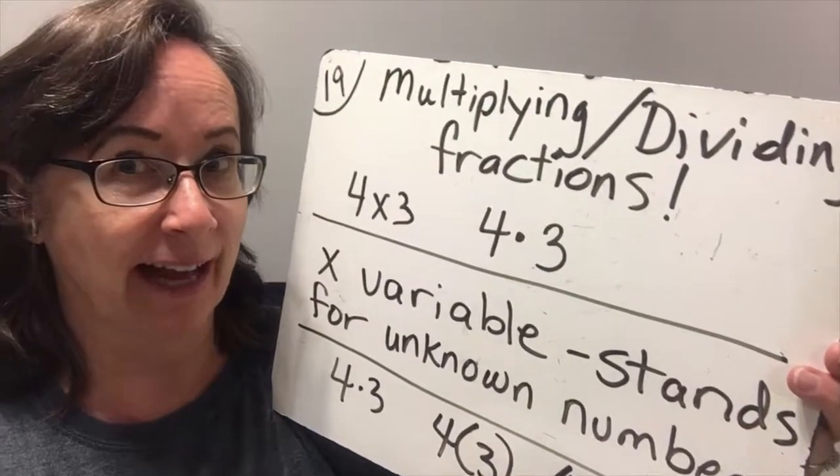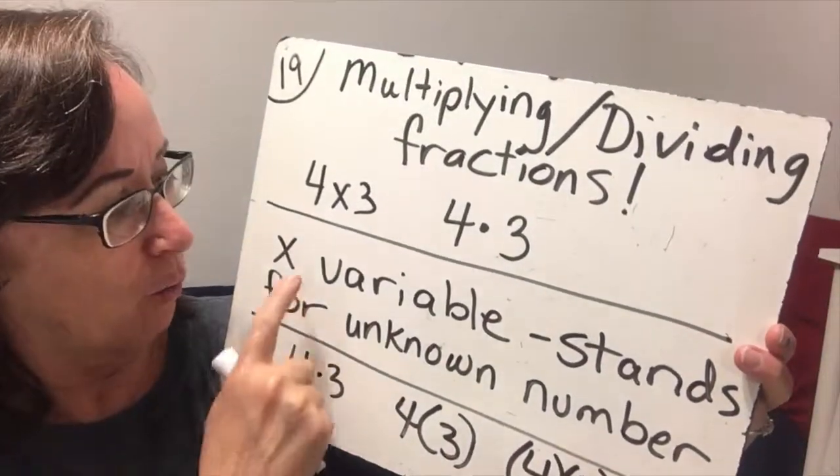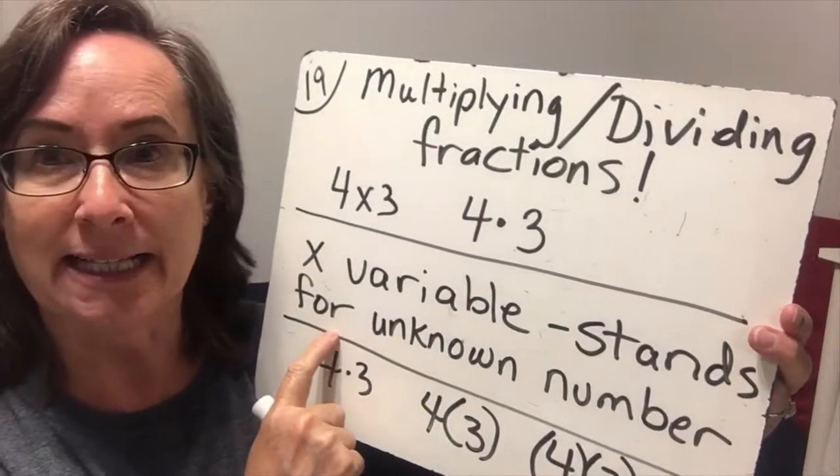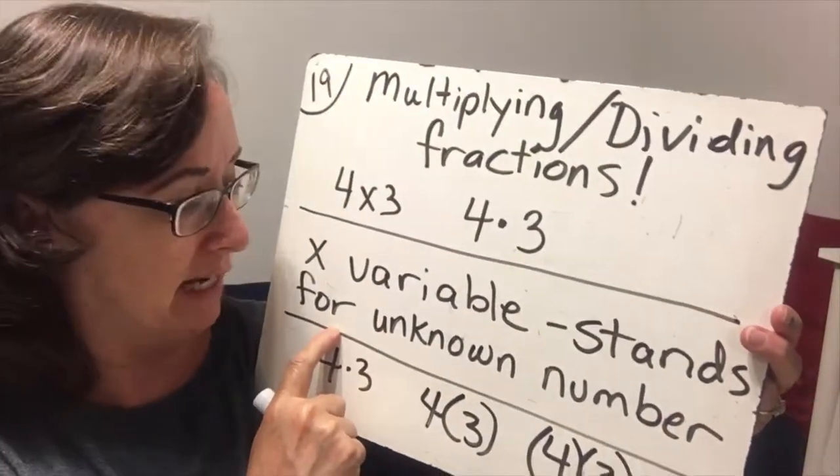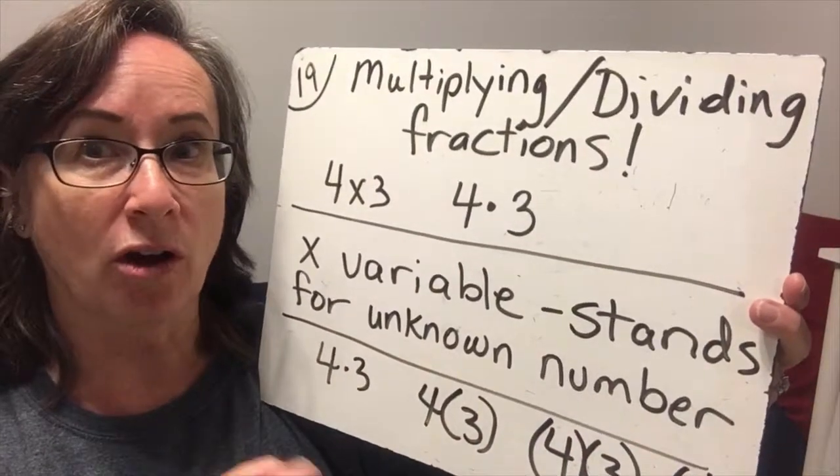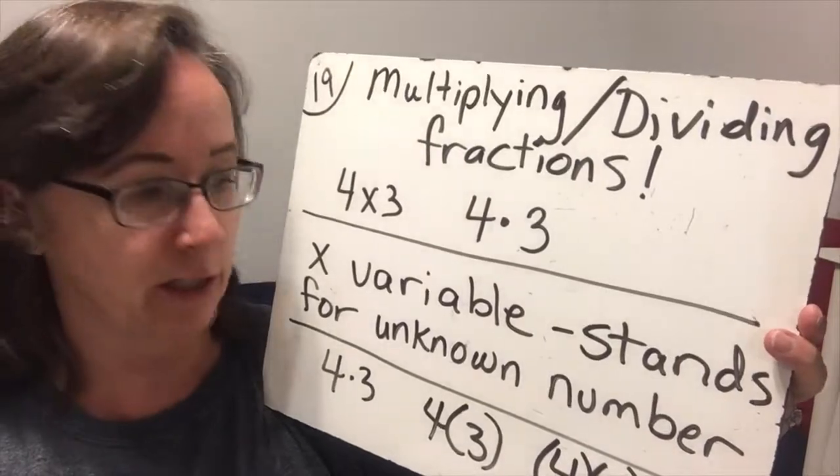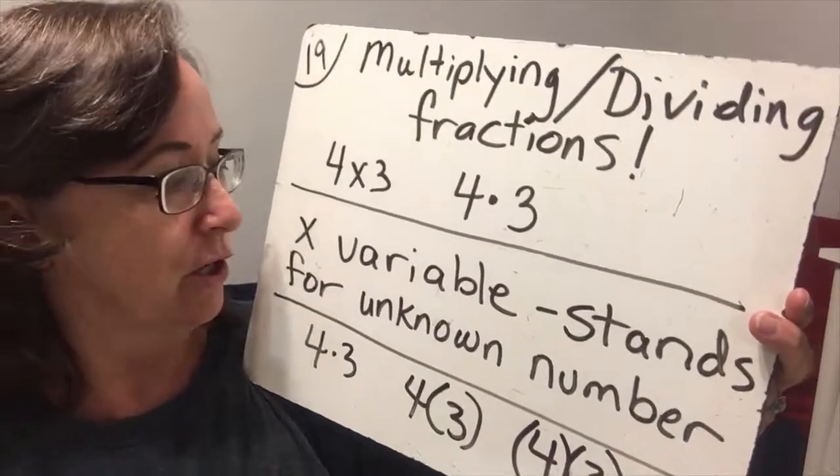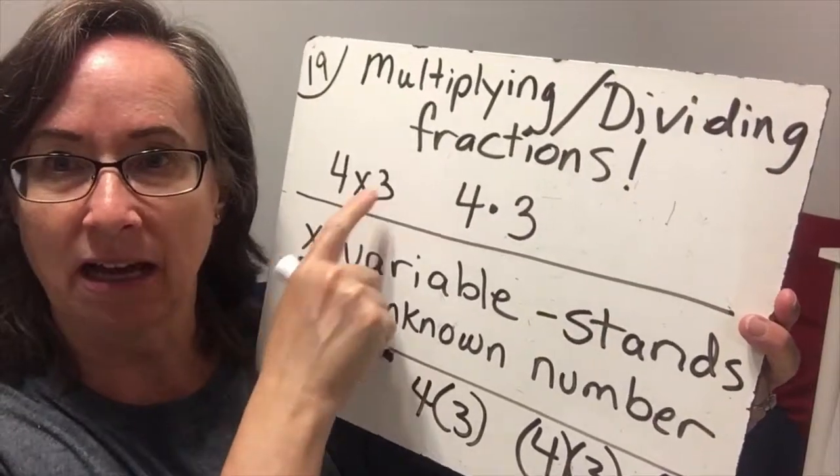We use x as a variable. And a variable is a letter that stands for an unknown number. And x is one of our most common variables that we're going to use. Therefore, it becomes awkward to use an x as a times symbol.